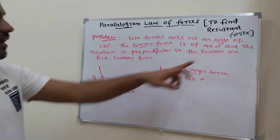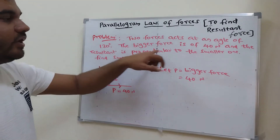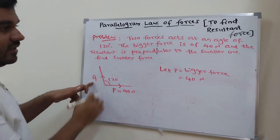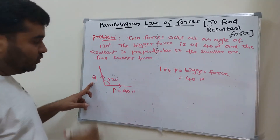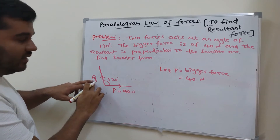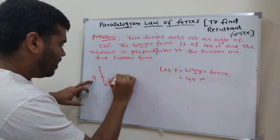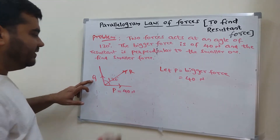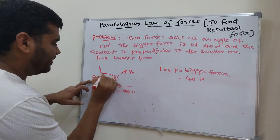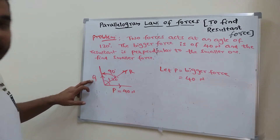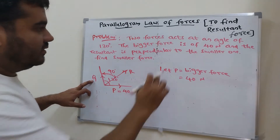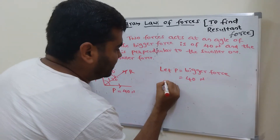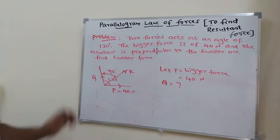The bigger force is 40 Newton and the resultant is perpendicular to the smaller one. If P is the bigger force, then Q is the smaller force. The resultant is perpendicular to Q, meaning the angle between resultant and Q is 90 degrees. We need to find Q equal to how much — that is the statement.